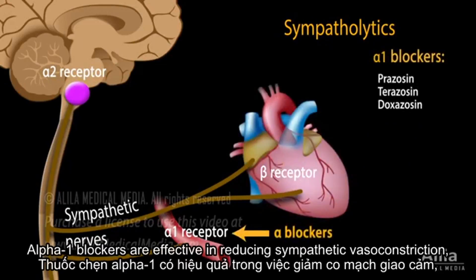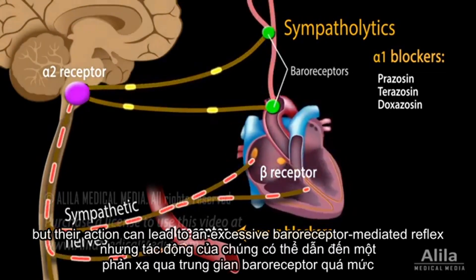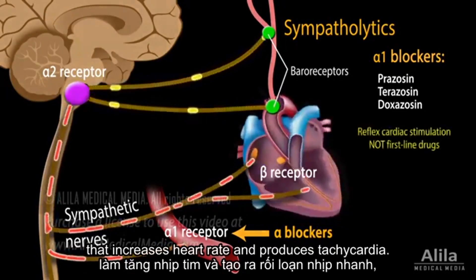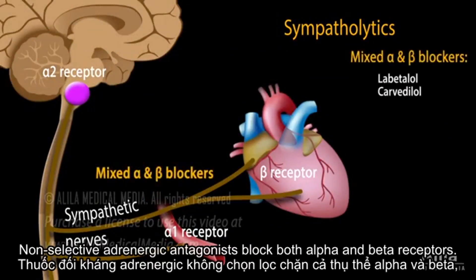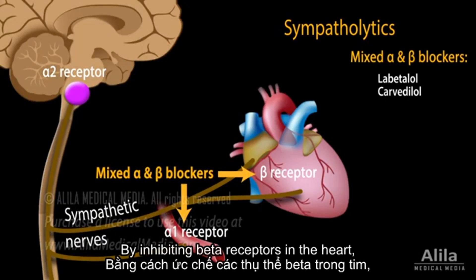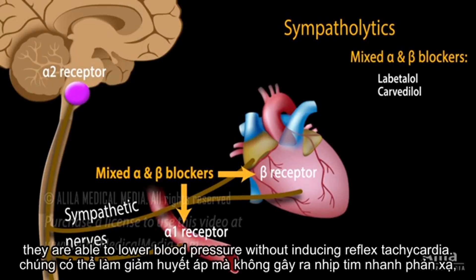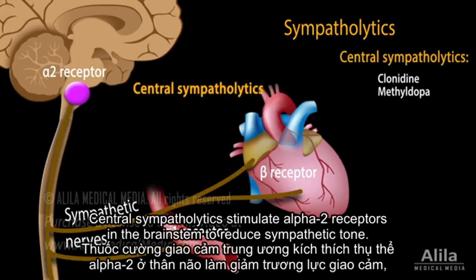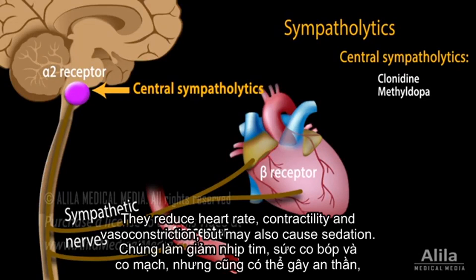Alpha-1 blockers are effective in reducing sympathetic vasoconstriction, but their action can lead to an excessive baroreceptor-mediated reflex that increases heart rate and produces tachycardia. Non-selective adrenergic antagonists block both alpha and beta receptors. By inhibiting beta receptors in the heart, they are able to lower blood pressure without inducing reflex tachycardia. Central sympatholytics stimulate alpha-2 receptors in the brainstem to reduce sympathetic tone. They reduce heart rate, contractility, and vasoconstriction, but may also cause sedation.